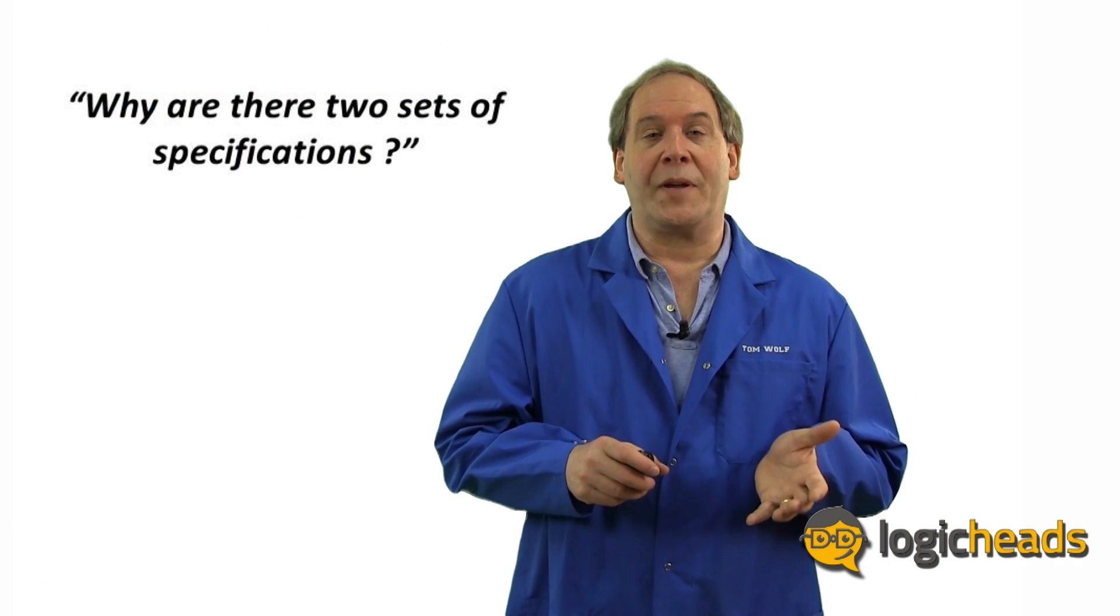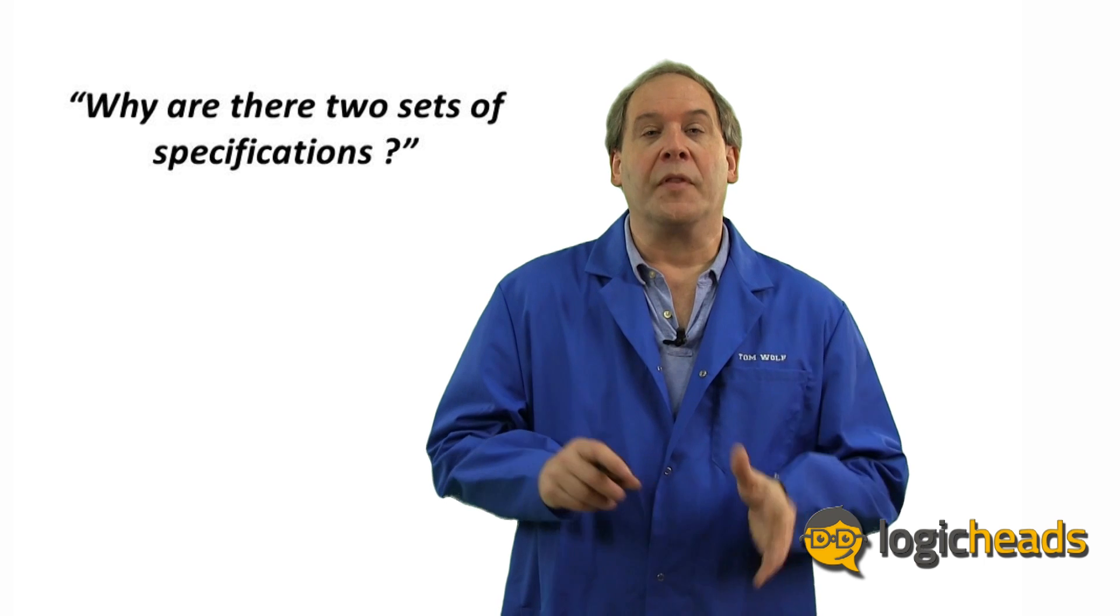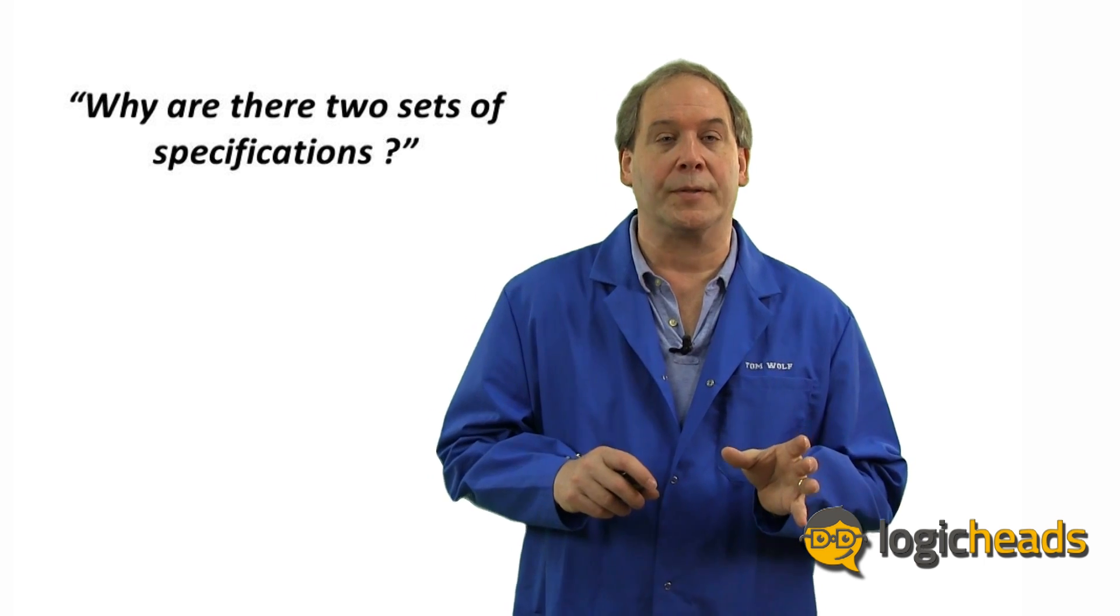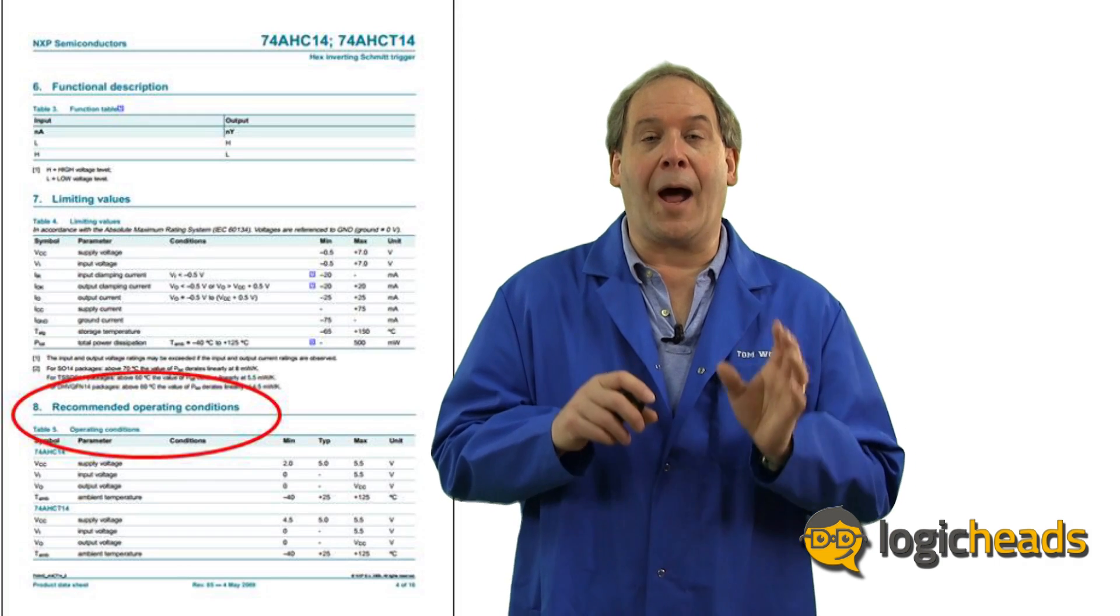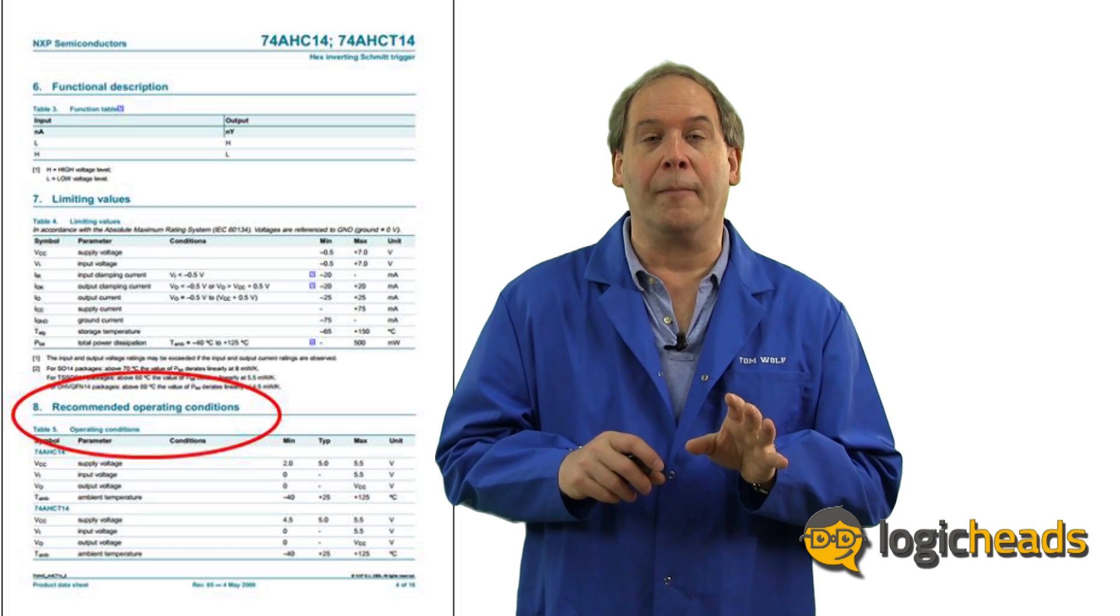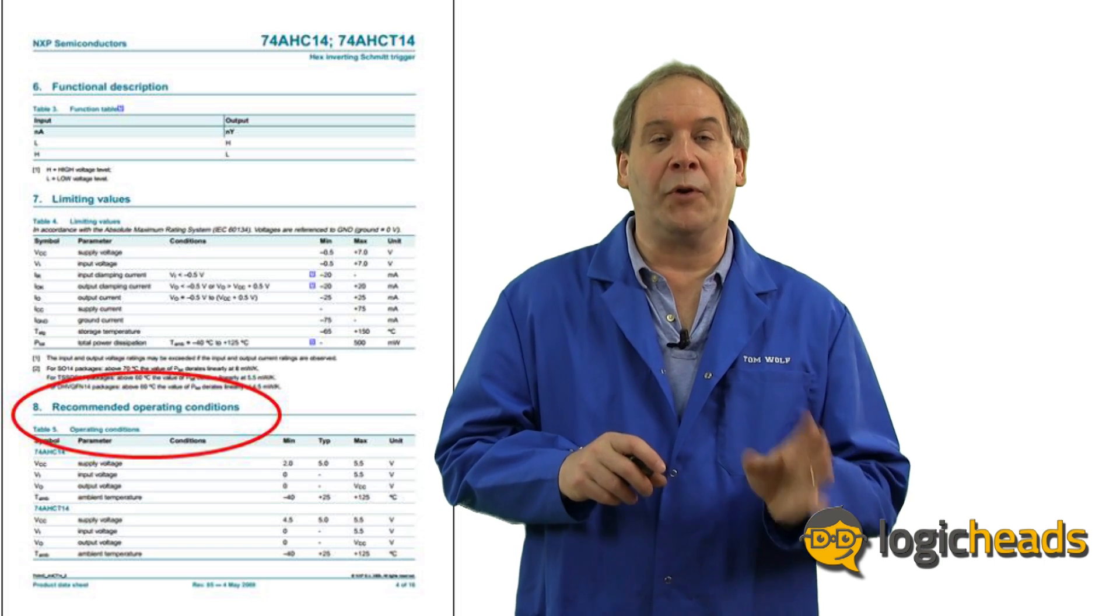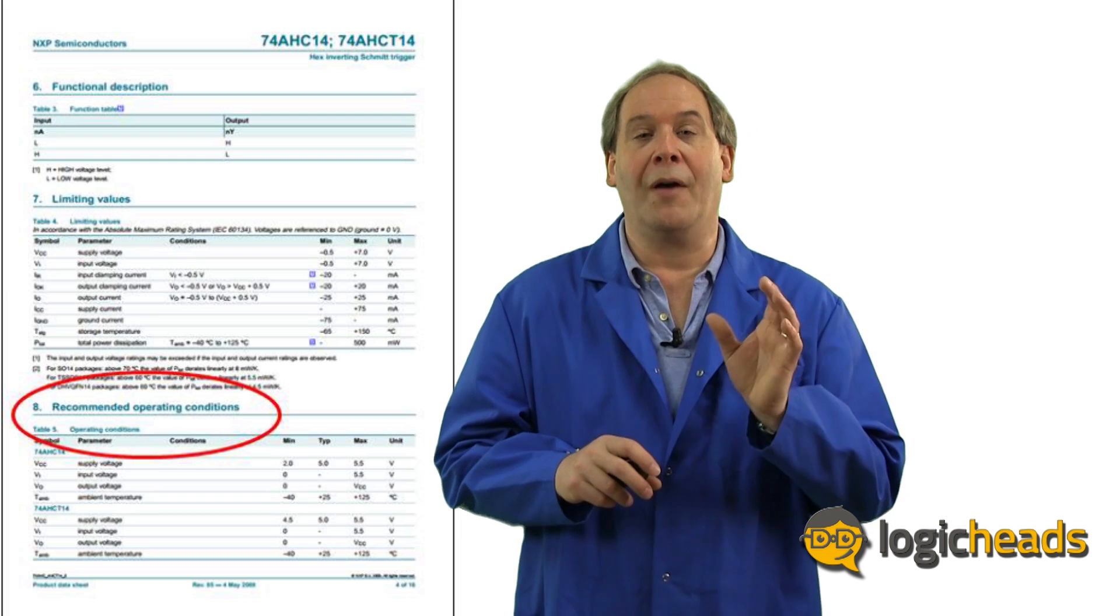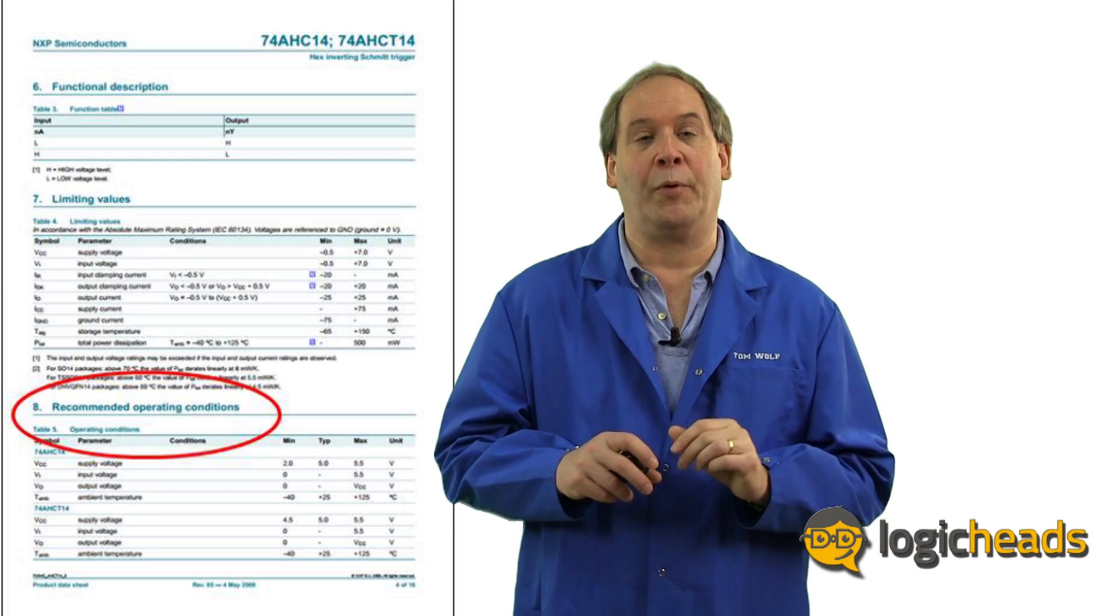Why are there two sets of specifications for each part? This is probably one of the most confusing parts of the entire datasheet and probably creates the most questions. The recommended operating conditions are the parameters that you should always use for your design. They give the minimum and maximum voltages and currents that the device should see. If you stay with these values, you will have a solid, stable, and reliable design.